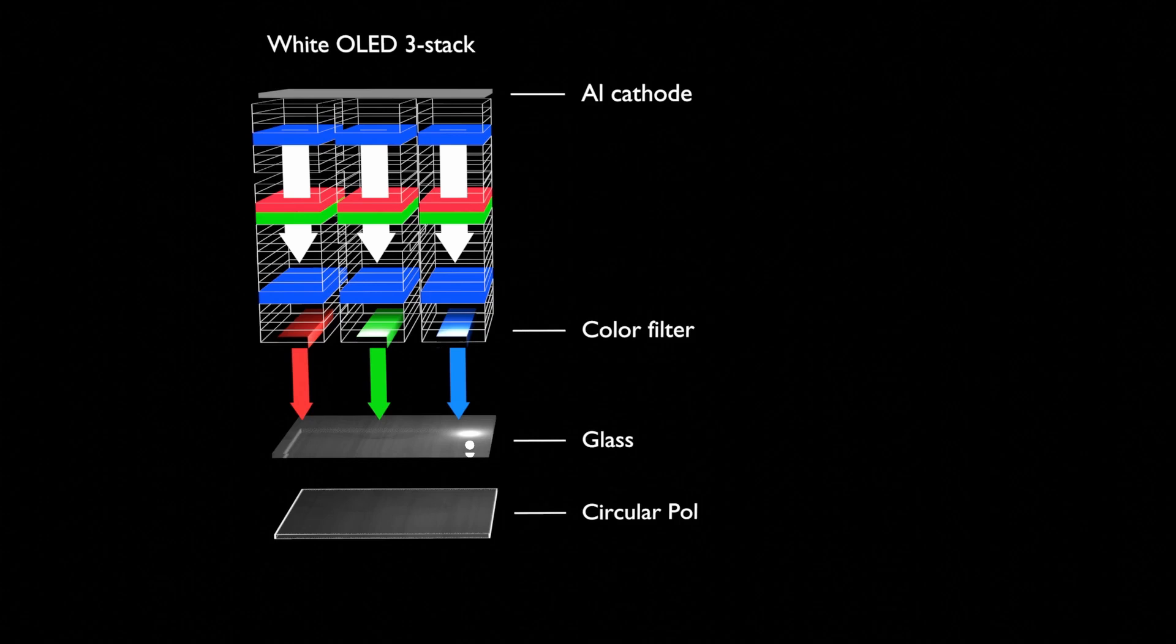As shown in the video, the circular polarizer has a transmittance of less than 50%, and the color filter has a transmittance of about 30%, and aluminum used as a cathode is a highly reflective metal, so it does not have the property of transmitting light at all.